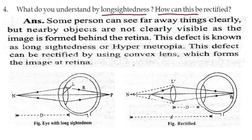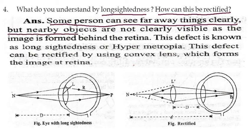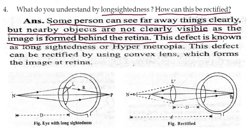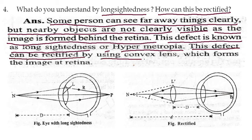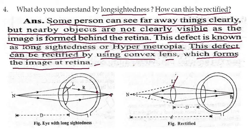With the concave lens, the image is formed on the retina. Now long-sightedness: some persons can see far away things clearly, but nearby objects are not clearly visible, as the image is formed behind the retina. This defect is known as long-sightedness or hypermetropia. This defect can be rectified by using a convex lens, which brings the image onto the retina. So rectification is done by using a convex lens.